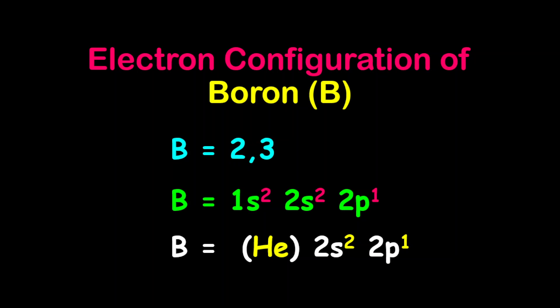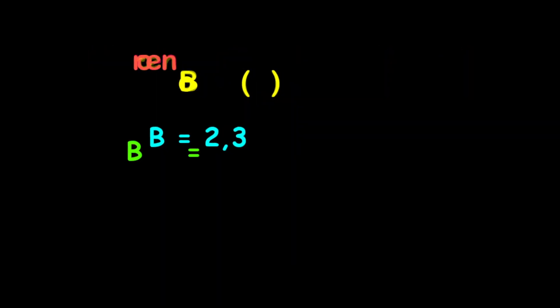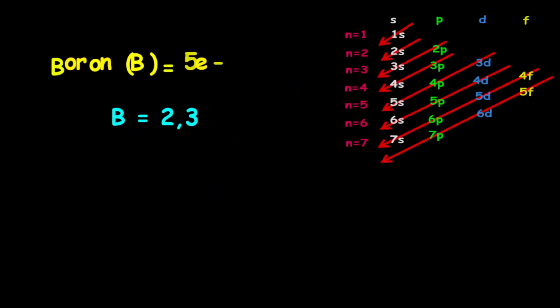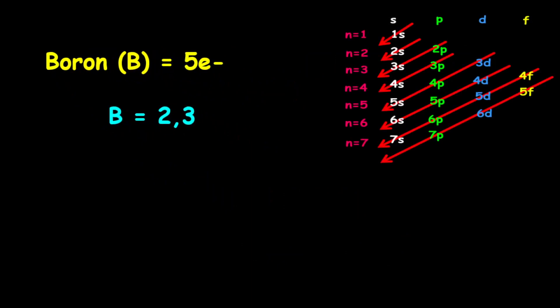The electron configuration of boron. Boron has five electrons. Therefore, two electrons will be on the first shell, and three electrons will be on the second shell. Therefore, the electron configuration is 2, 3.